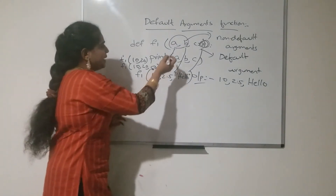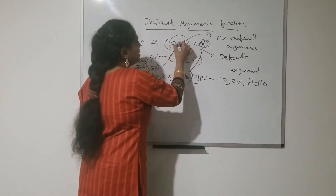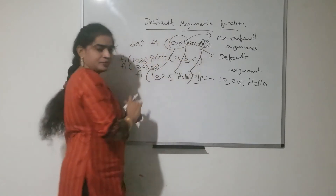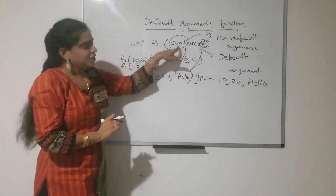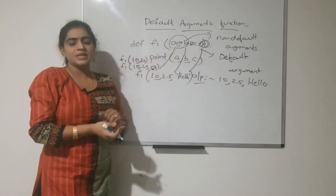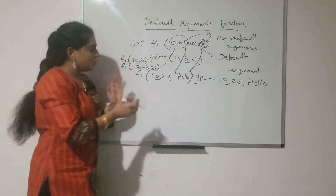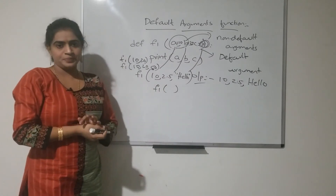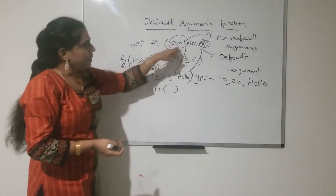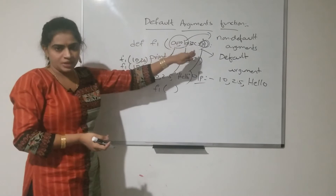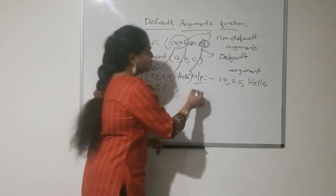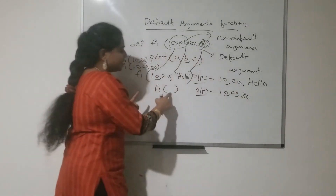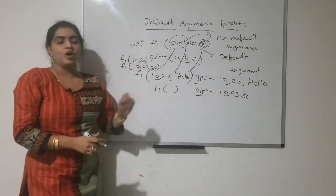You can also initialize all the values within the function definition — like a=10, b=20, c=30 — making all arguments default values. Then in the function call you can call it without passing any arguments. All default values will be printed on the output screen: 10, 20, 30.